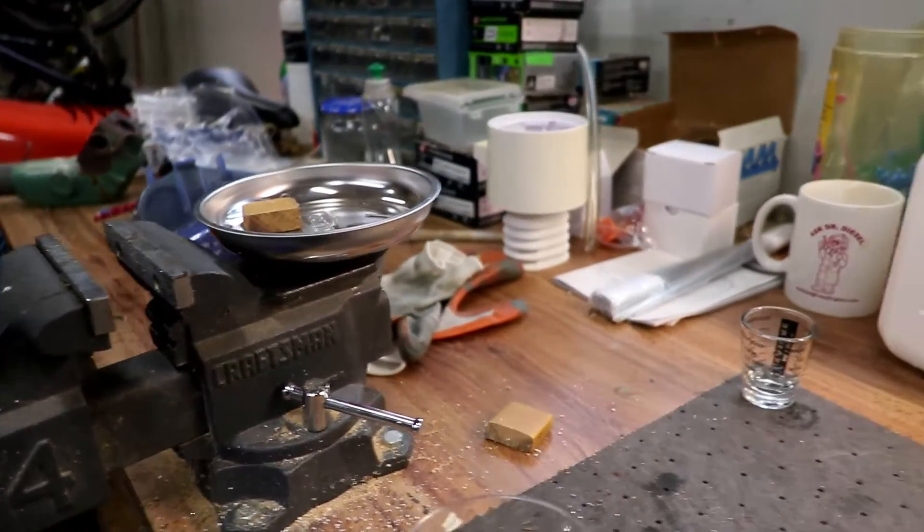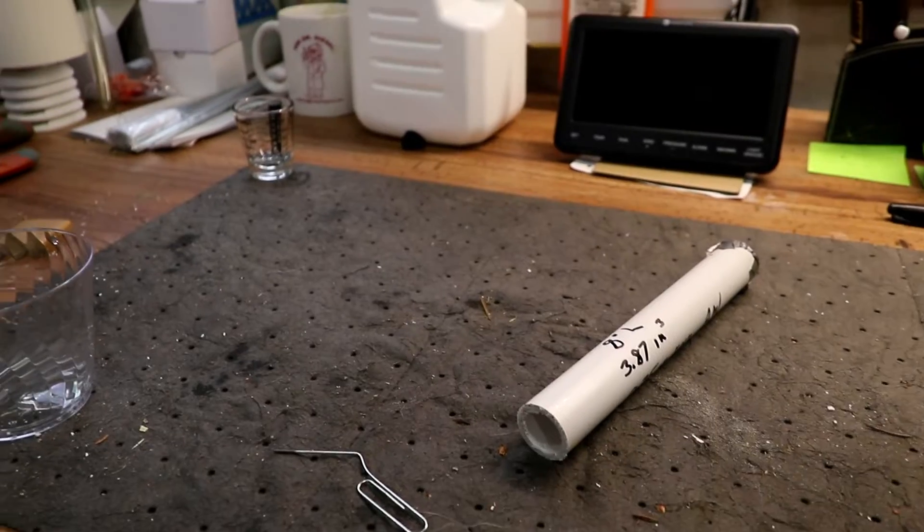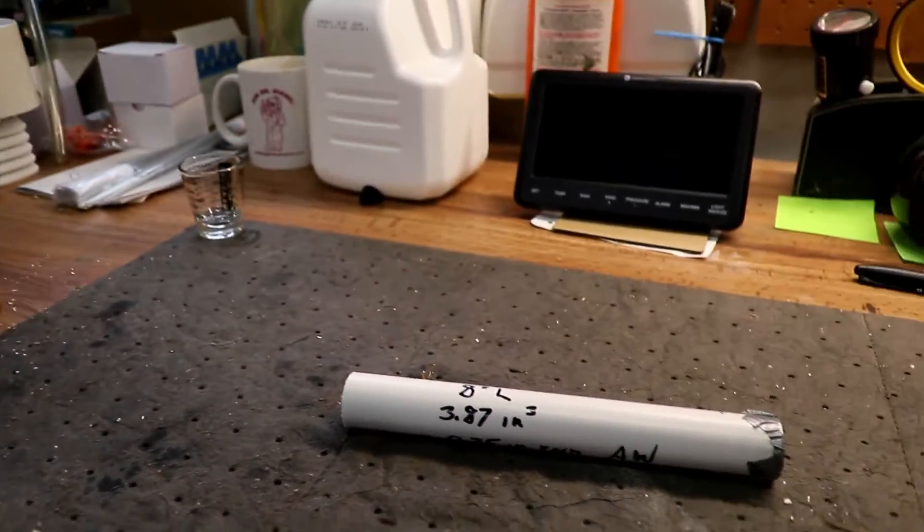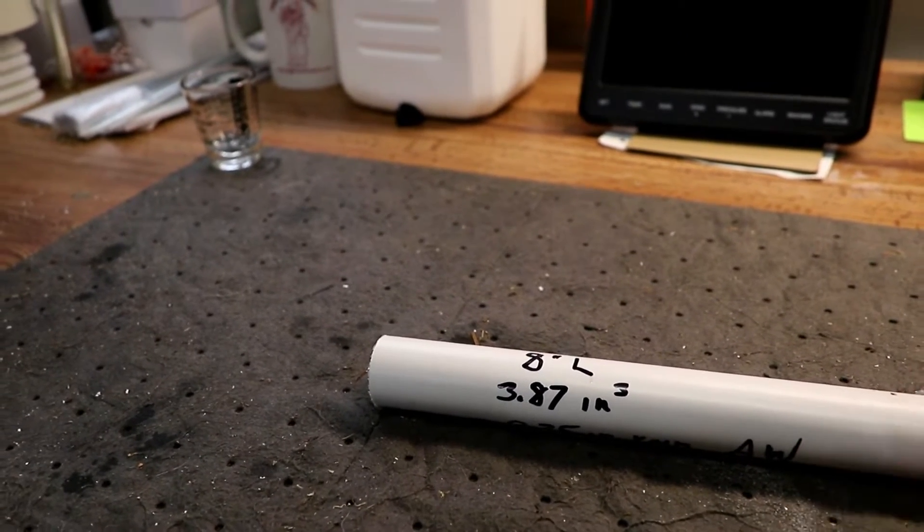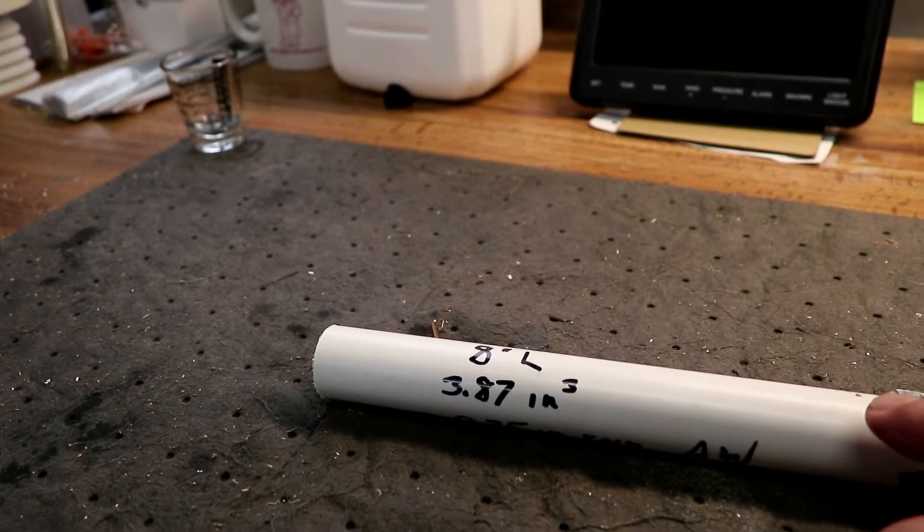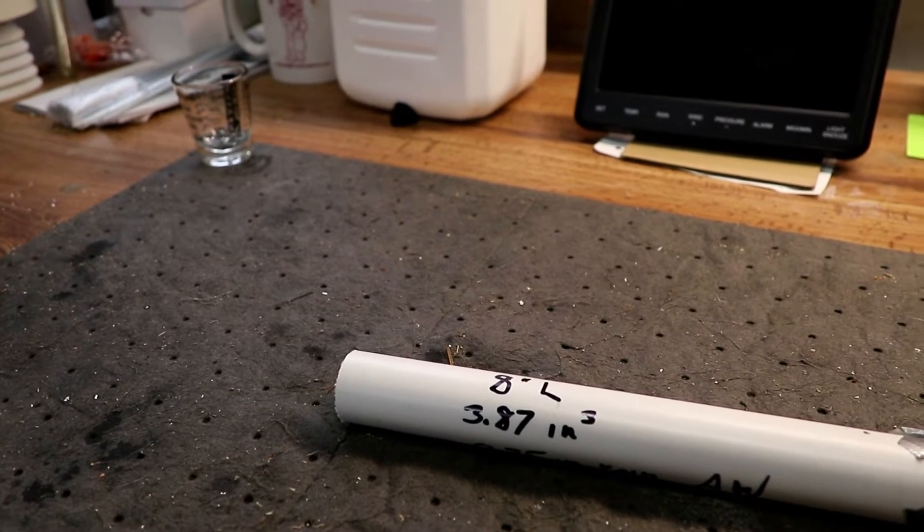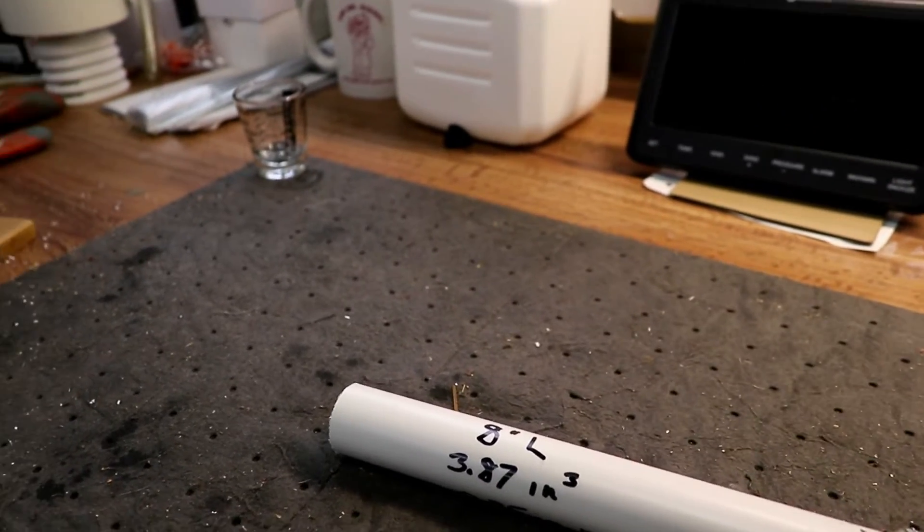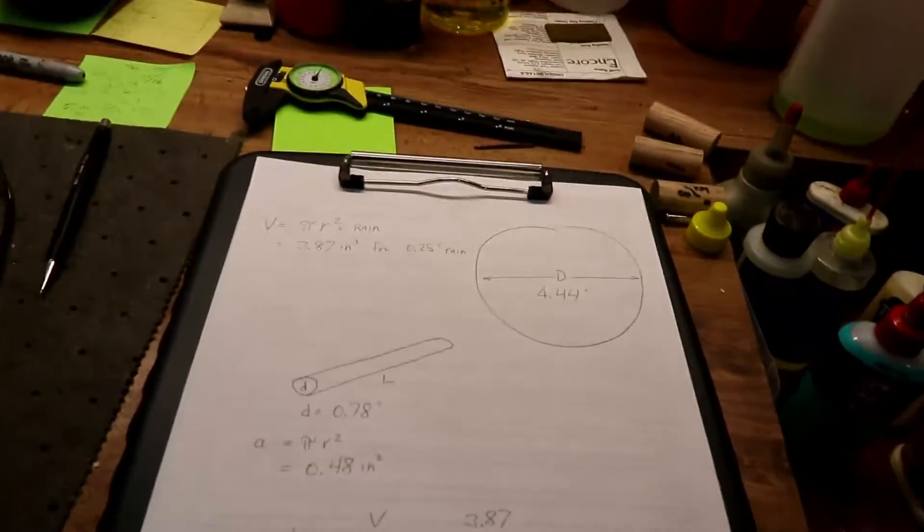Then you can go to a piece of PVC pipe that is 3/4 inch in diameter and calculate how long of a piece of PVC pipe you need to be equivalent to a 0.25 inch rainfall. So 0.25 inches into that catchment basin is 3.87 cubic inches, and when you do the calculation, it turns out to be an 8 inch length of PVC pipe. Here's a quick look at the calculation itself.